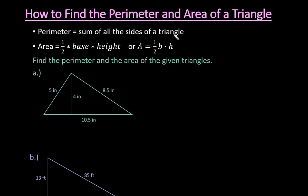So the perimeter is the sum of all the sides of a triangle and the area is going to be found by doing one half, the base times the height of the triangle.